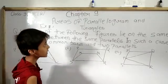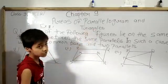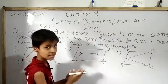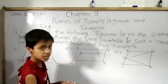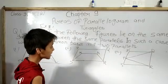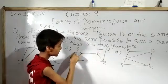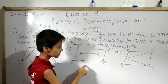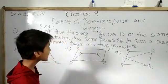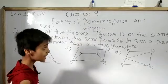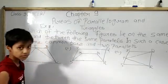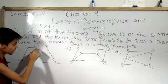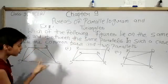Before solving this question, let me define a parallelogram and a triangle. A quadrilateral in which opposite sides are parallel to each other is called a parallelogram — those two sides are opposite and parallel, and those other two sides are also opposite and parallel. Next, a closed curve with three sides is called a triangle, just like here we have a closed curve having only three sides.